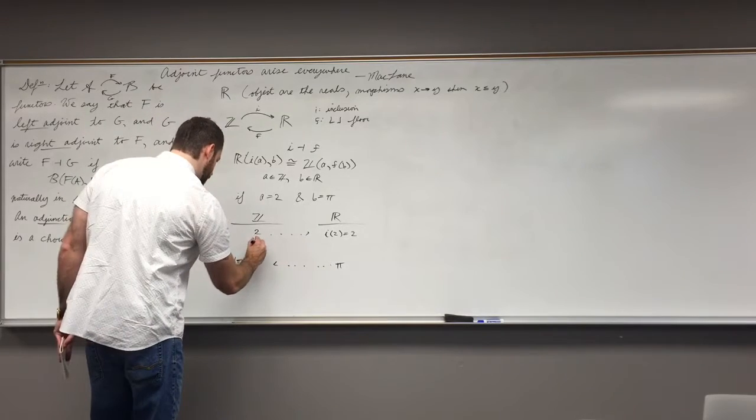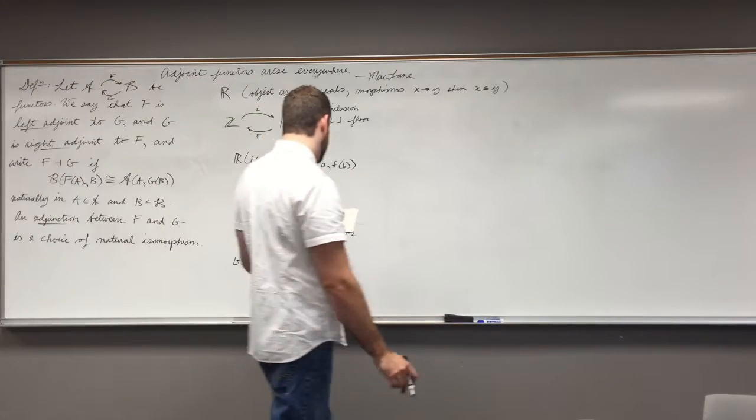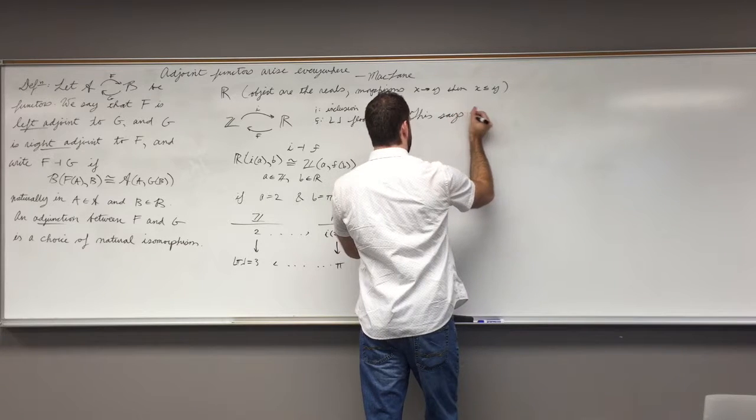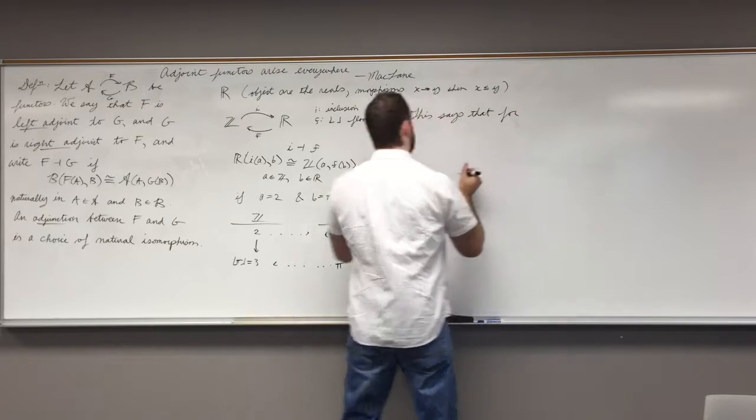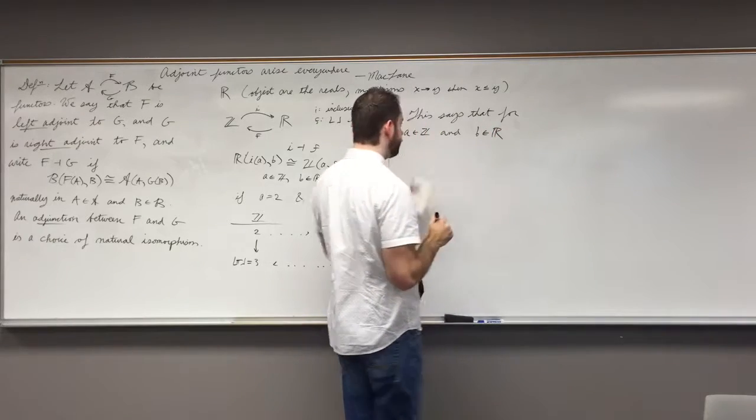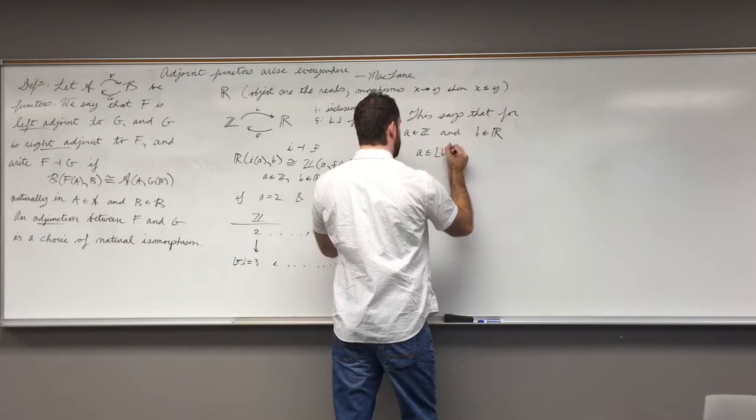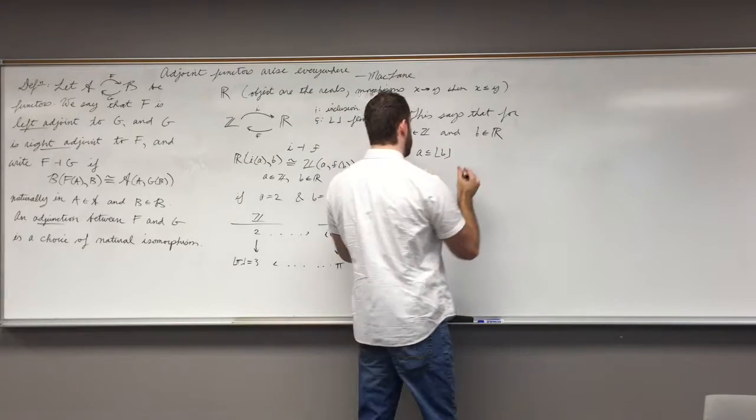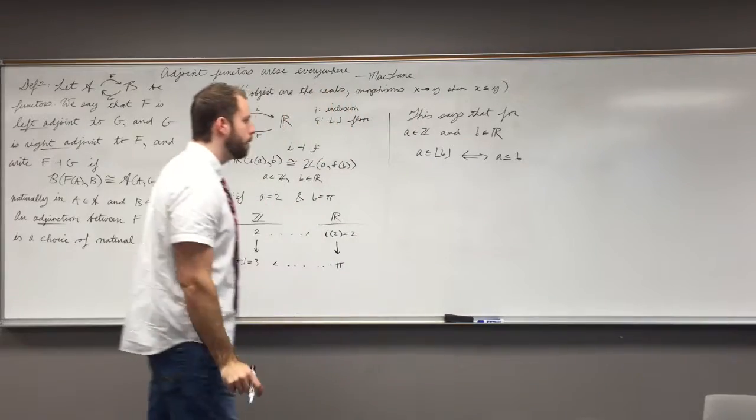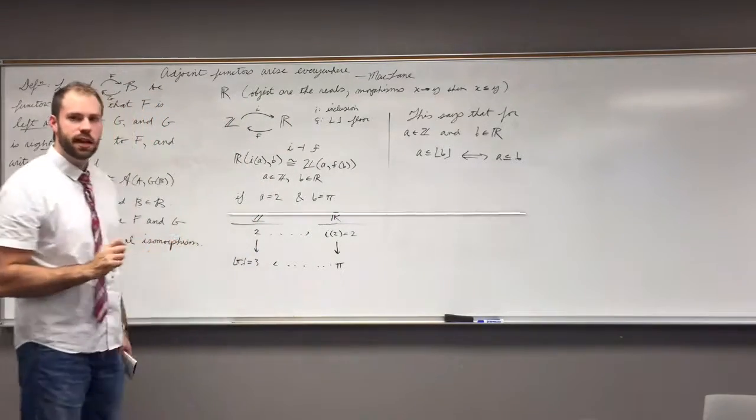So this adjunction says that a map here is the same as a map there. So in other words, so this says that for A, an integer, and B, a real number, that A is less than or equal to the floor of B, and this is if and only if A is less than or equal to B. So this is kind of a cool thing to see, and it's really simple, using just these adjoint functors.